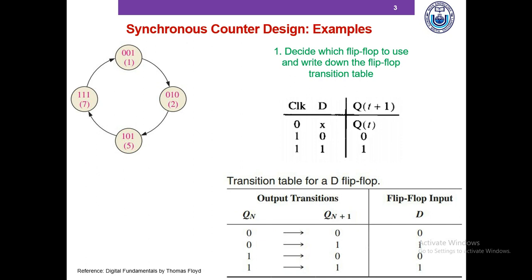To complete the first row of the transition table, we look into the transition and ask what D value could have caused this 0 to 0 transition. We observe the characteristic table and find out that 0 to 0 transition is possible when D is equal to 0, so we write D equals 0 in the first row. For the second row, we ask what D value causes the 0 to 1 transition, and find that D equals 1. We write 1 in the second row and in this manner complete the transition table.